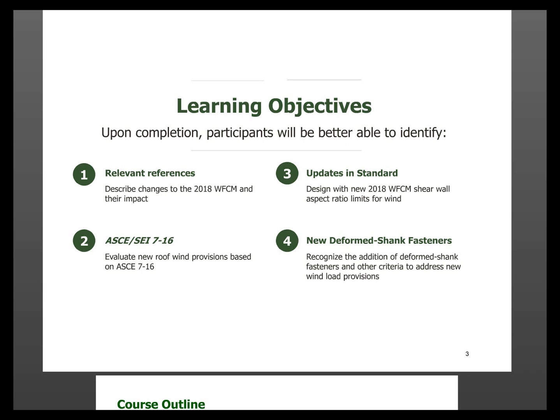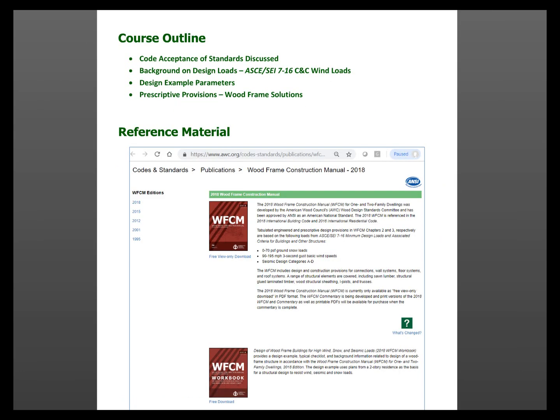We also added, for the first time ever, deformed shank fasteners in our 2018 Wood Frame Construction Manual — that's roof sheathing ring shank nails, which some of you might be familiar with. You'll see some provisions for those and we'll talk about those as well.